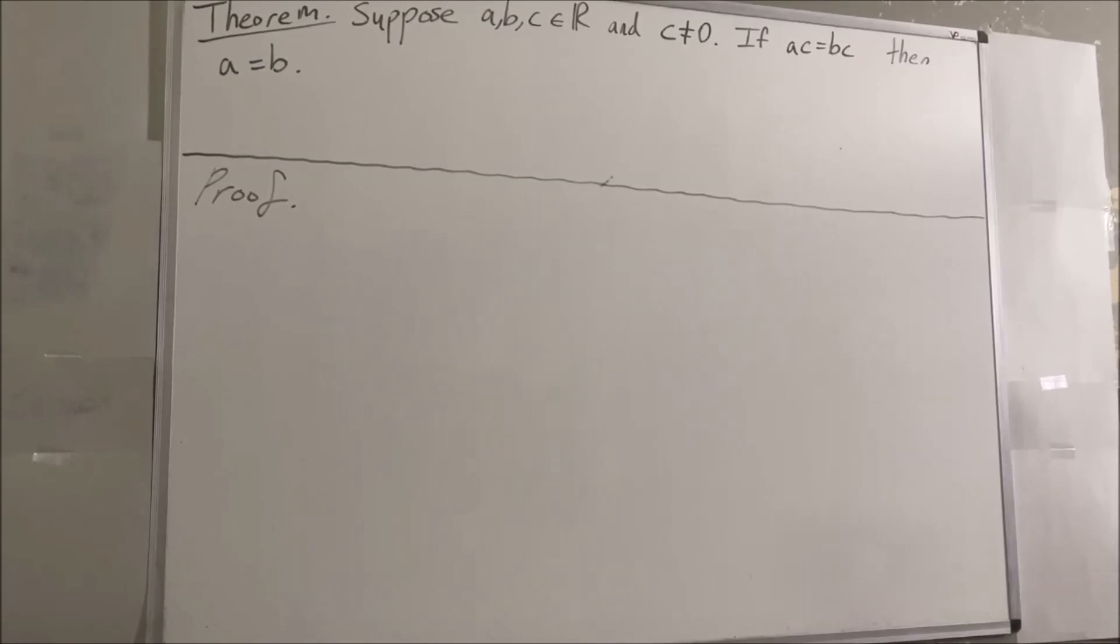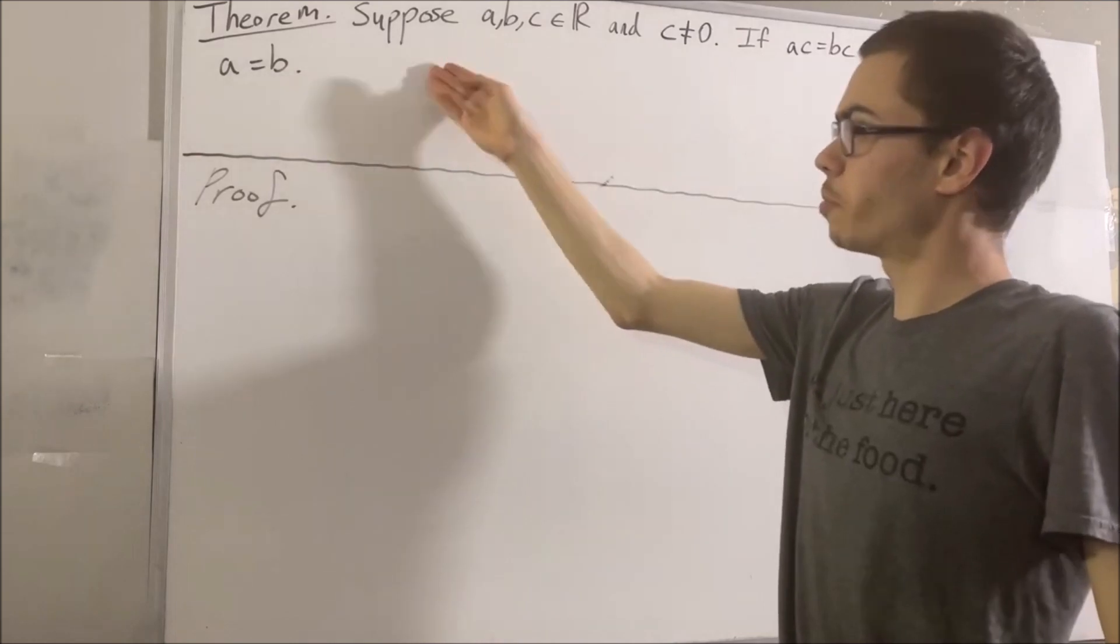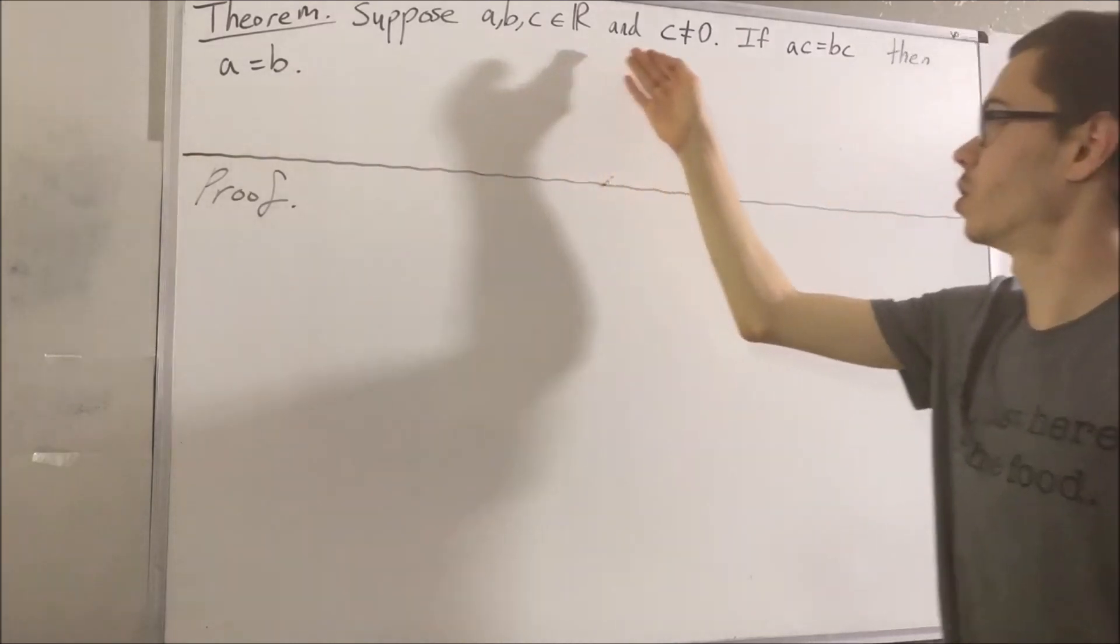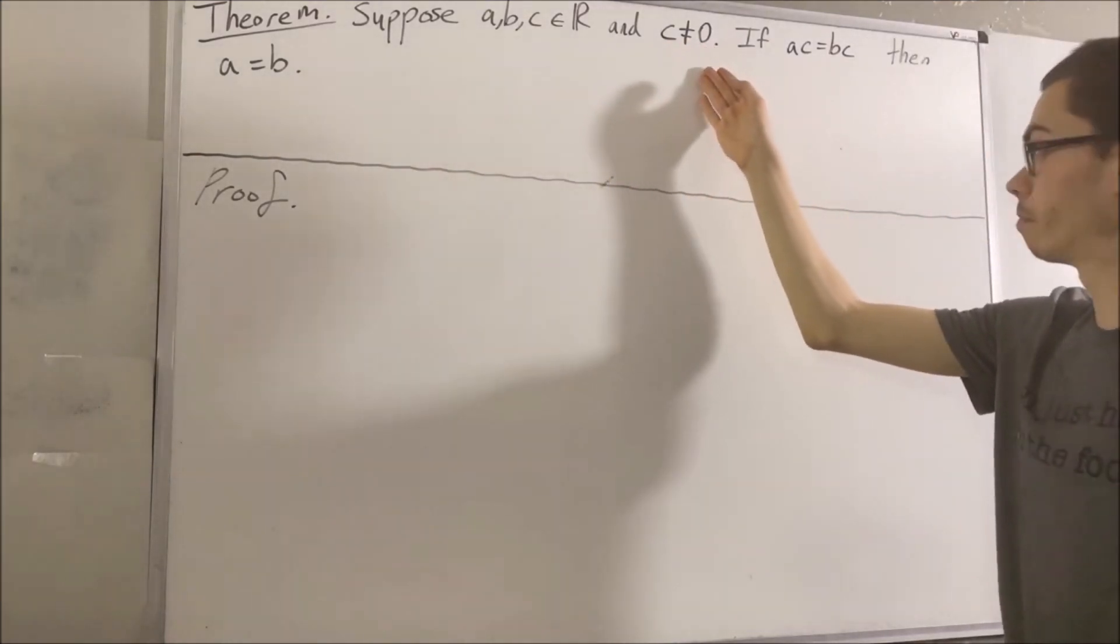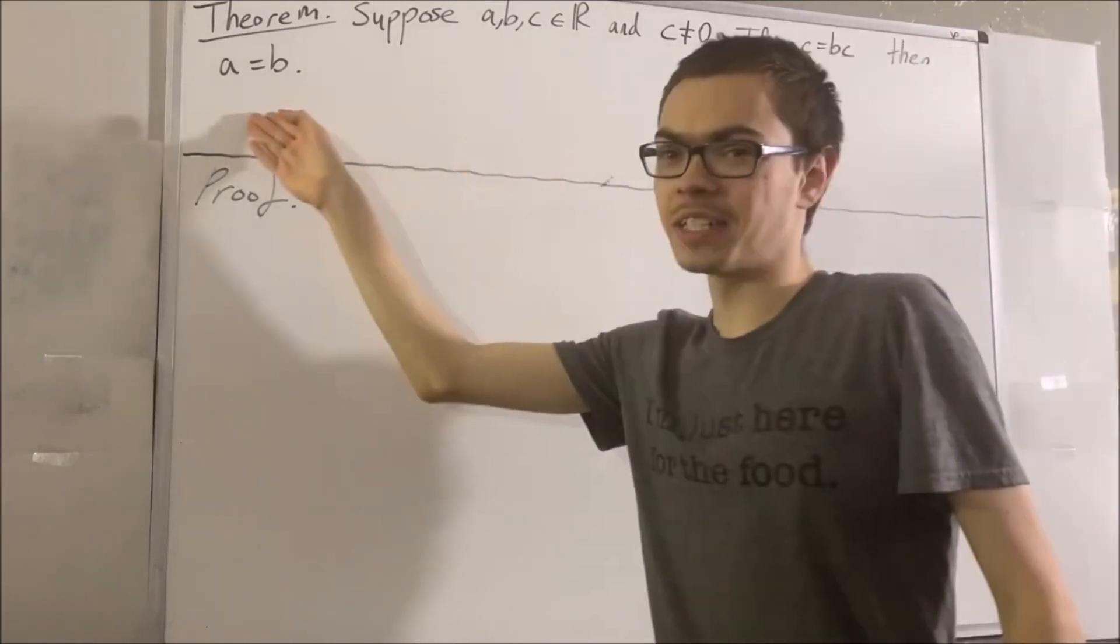Hello! In this video, we are going to prove the following theorem. Suppose A, B, and C are real numbers, where C is not equal to 0. If AC is equal to BC, then A is equal to B.